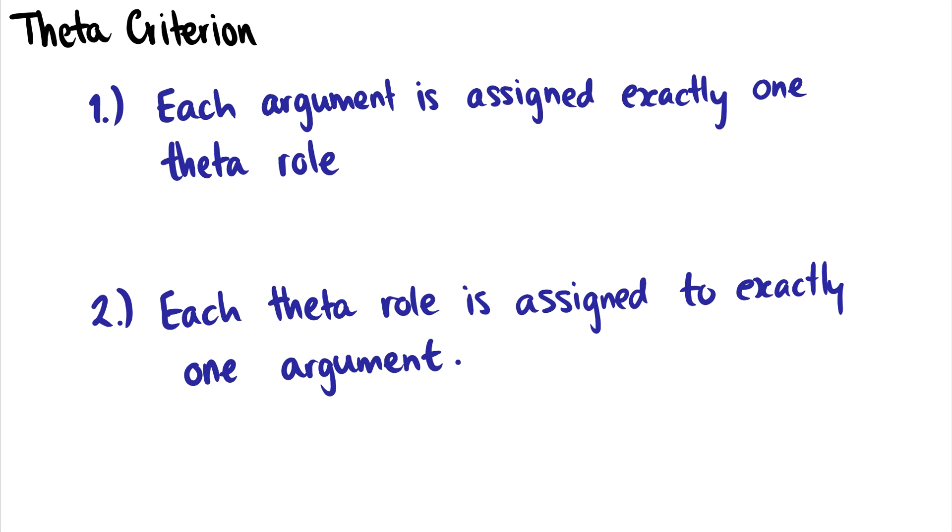So let's talk about the theta criterion. The theta criterion states that each argument is assigned exactly one theta role. So for every DP in our sentence, it will get a theta role. And each theta role is assigned to exactly one argument. This means in one clause, you will not have two agents, you will not have two themes, you will not have two goals, you will just have one of each, or one of however many you need.